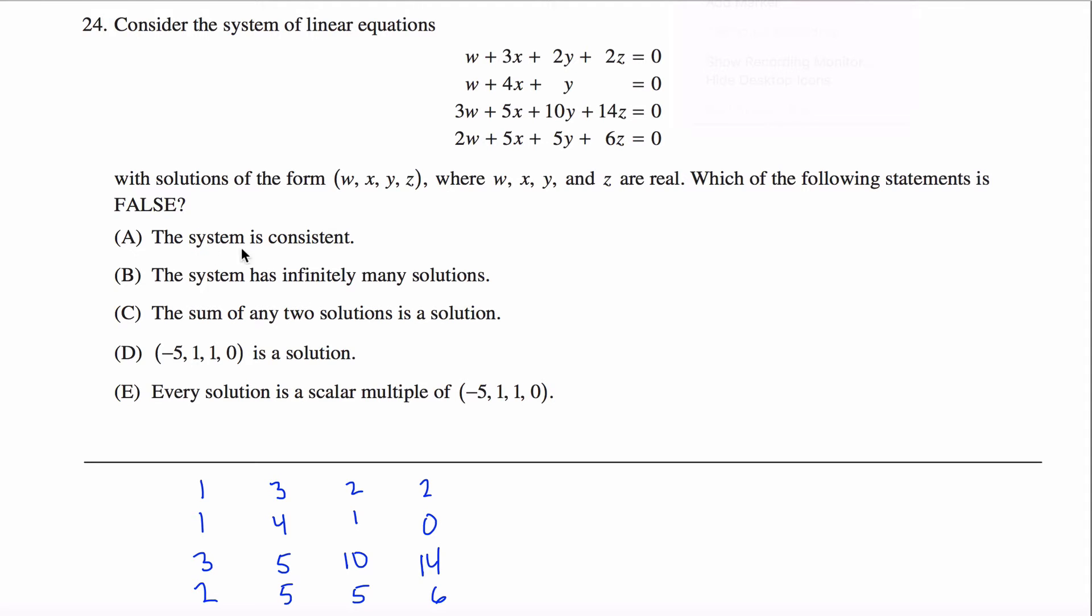But actually before we even get into row reducing this matrix, I think we can answer some of these questions. The first one says the system is consistent. What that means is it has a solution. Does this thing have a solution? Is there some value that I can plug in for w, x, y, and z that will make all four of these equations simultaneously true? Yeah, you can make them all zero.